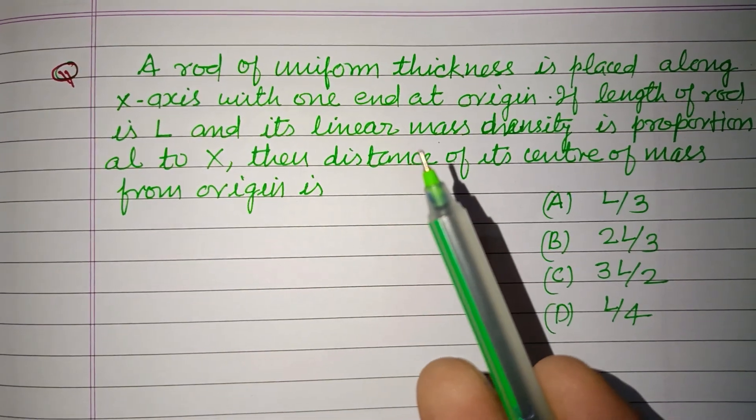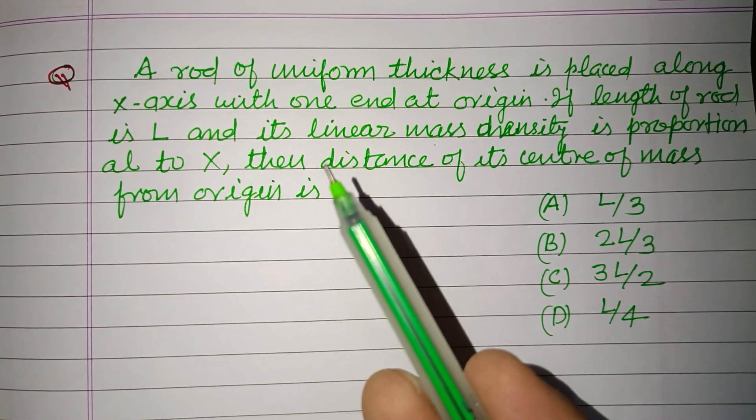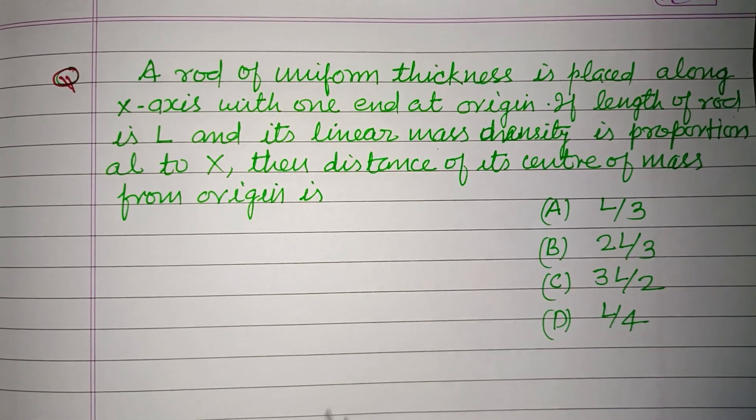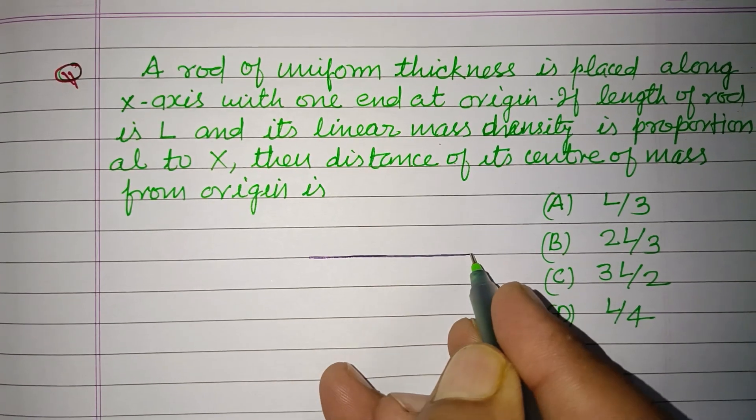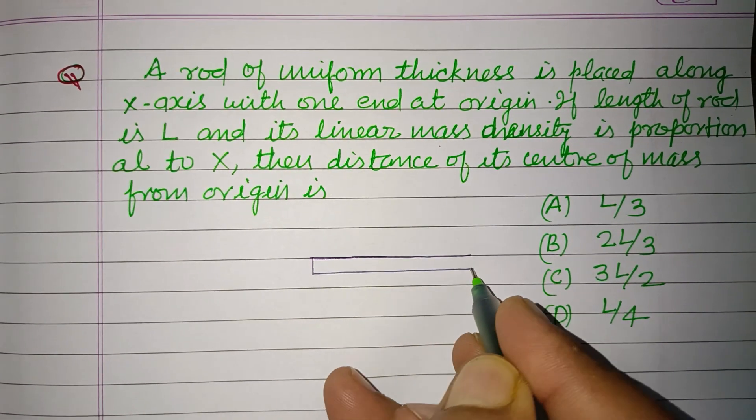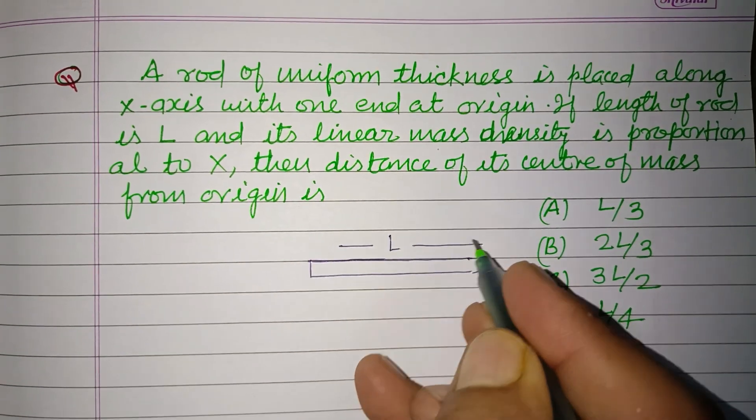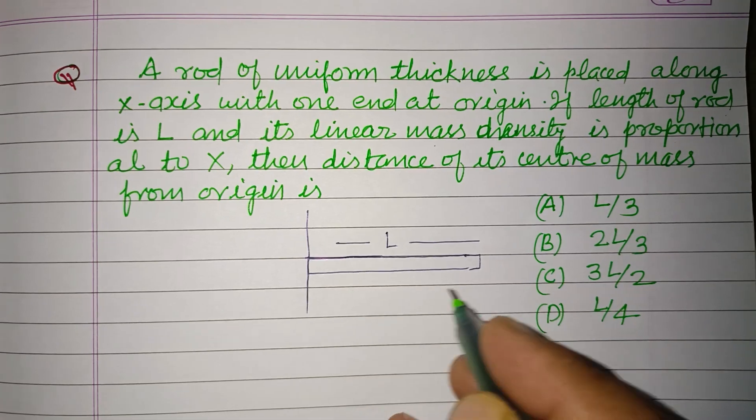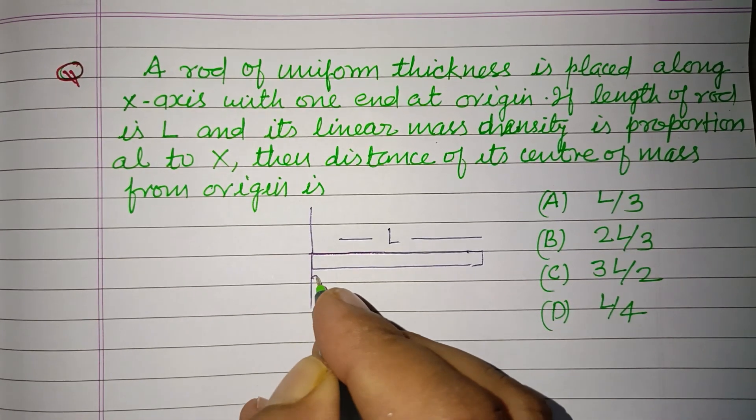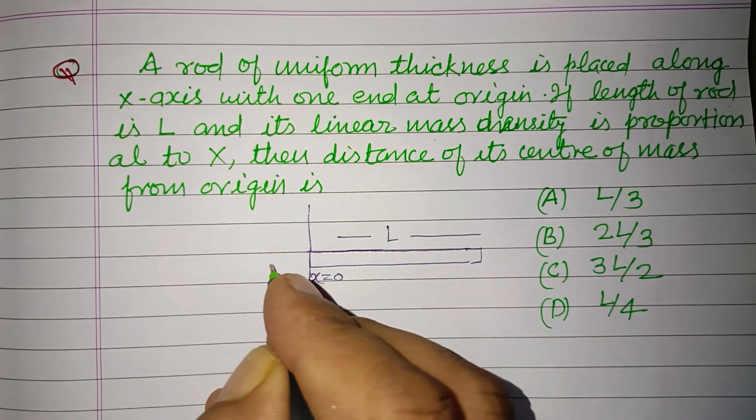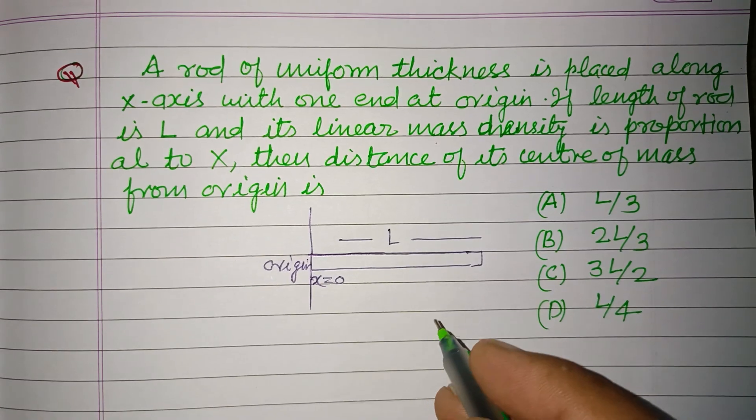A rod of uniform thickness is placed along the x-axis with one end at origin. So here is a rod of length L, placed along x-axis with one end at origin. So this is x equal to zero origin.